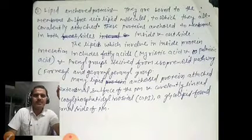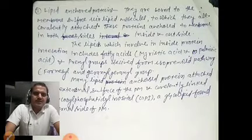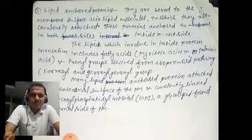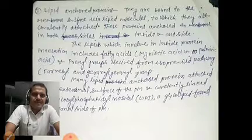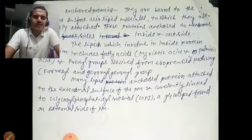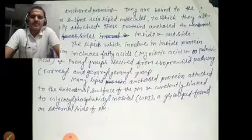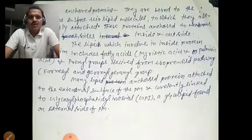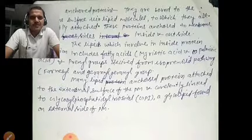Protein anchored to membrane both inside and outside - outside they can be attached and inside they can be attached. The lipids which are involved in inside protein interaction include fatty acids which are myristic acids and palmitic acids, and prenyl groups derived from isoprenyl pathway and geranyl geranyl groups. Many lipid-anchored proteins attached to external surface of the plasma membrane are covalently attached to glycosyl phosphatidyl inositol (GPI), a glycolipid found on external side of plasma membrane. Lipid-anchored proteins can be on inside cytoplasm side and also on the extracellular side or the cell's outer surface.